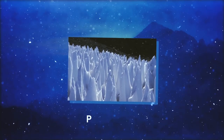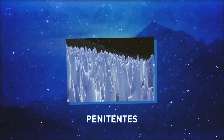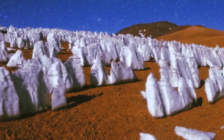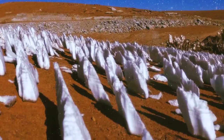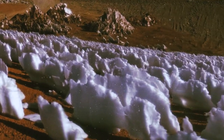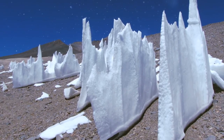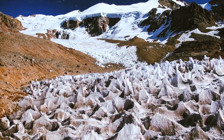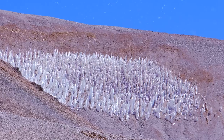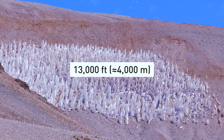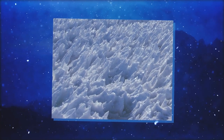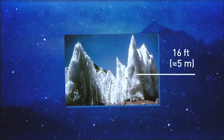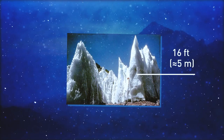Another amazing ice phenomenon is called penitentes. These are snow formations found at very high altitudes. Numerous and closely spaced, they look like long, thin blades of hardened snow or ice that point towards the sun. These icy spires grow over snow-covered and glaciated regions in the dry Andes at a height of more than 13,000 feet. Some penitentes are just several inches tall, while others reach 16 feet — that's around three human heights.